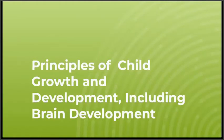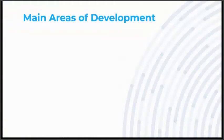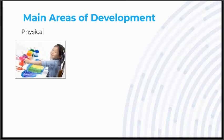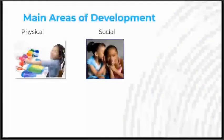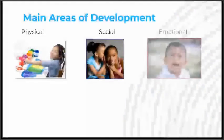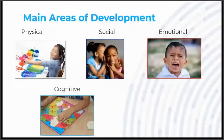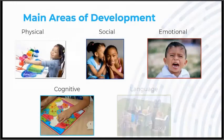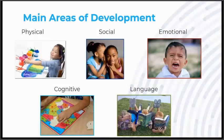This topic is Principles of Child Growth and Development, including brain development. The main areas of development include physical, social, emotional, cognitive, and language.